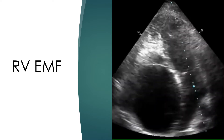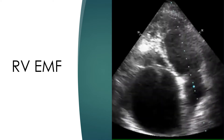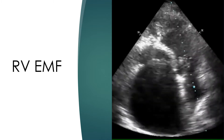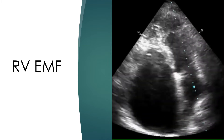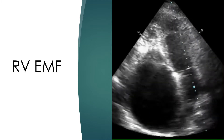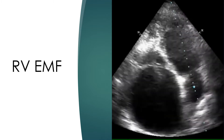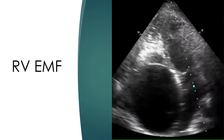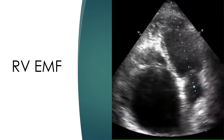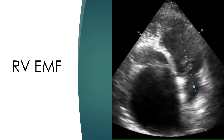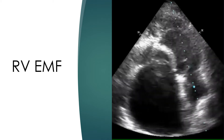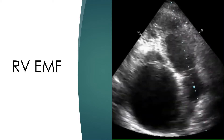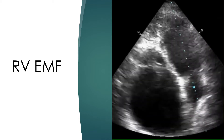Echocardiogram in apical four chamber view demonstrating salient features of right ventricular endomyocardial fibrosis. The right atrium is grossly dilated and the interatrial septum is pushed to the left. The left ventricle and left atrium are normal, though the left atrium appears compressed by the huge right atrium.